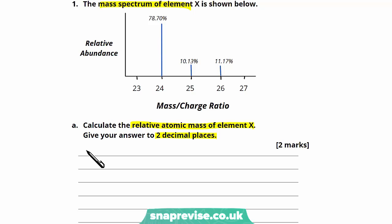So we first of all have 78.70 percent and the mass charge ratio of that particular peak is 24. We're going to add the rest, so that's 10.13 multiplied by 25, and we're going to add to that our final peak of 11.17 multiplied by 26. We're going to divide through that whole thing by 100.